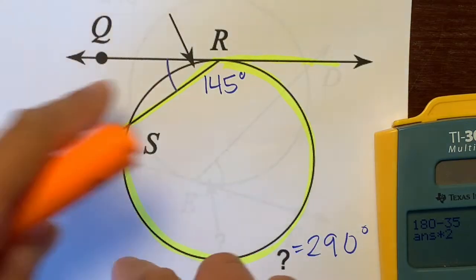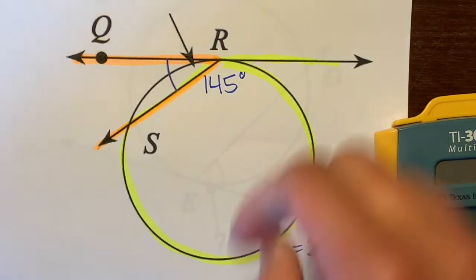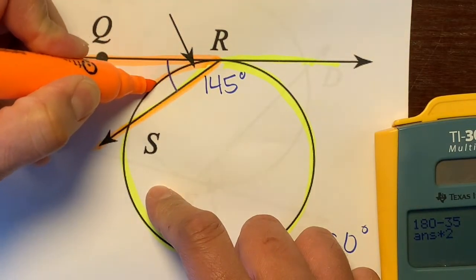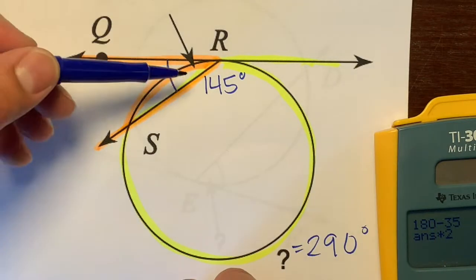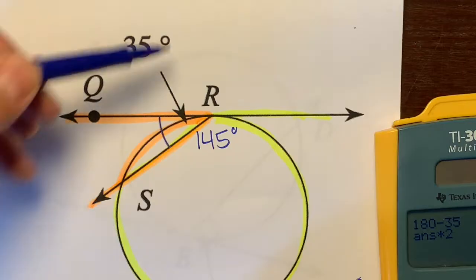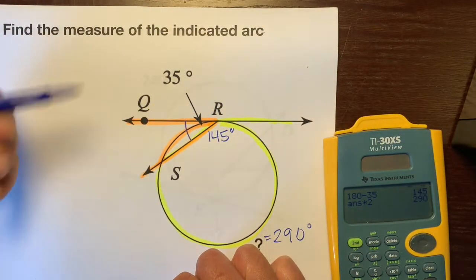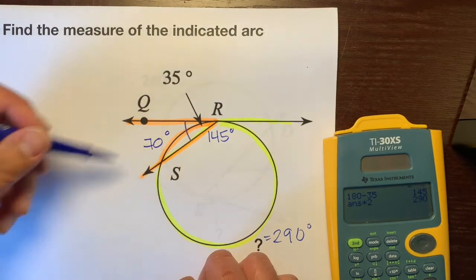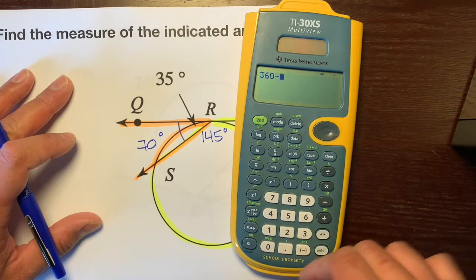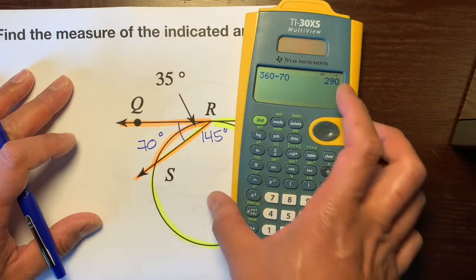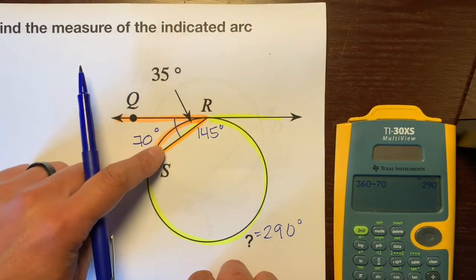Another way to do this: we know that this angle is 35 degrees, and this angle is eating or intercepting this arc. The angles are half the measure of the arcs, and the arcs are twice as much. So we multiply 35 by 2, which means this arc is 70 degrees. Then to figure out the other arc, the entire circle is 360, so 360 minus 70 is 290. We get the exact same answer. The angle is half the measure of the arc that it's intercepting.